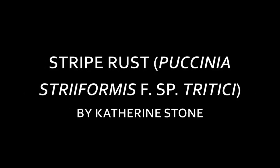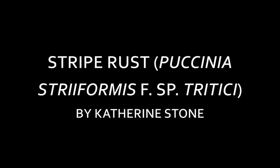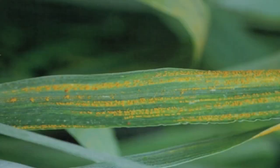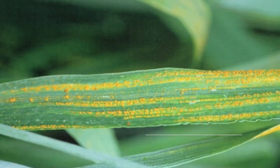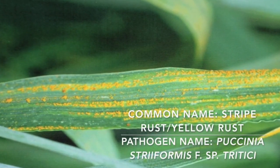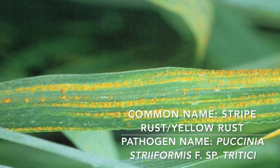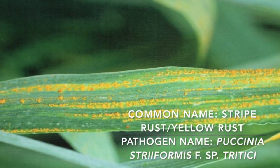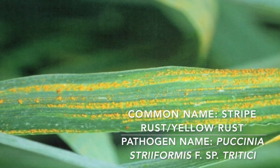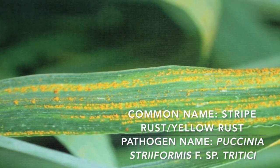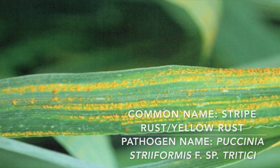Hello everyone, my name is Kate Stone and today I'm going to talk about stripe rust. Stripe rust, also commonly known as yellow rust, is caused by the pathogen Puccinia striiformis forma specialis tritici.